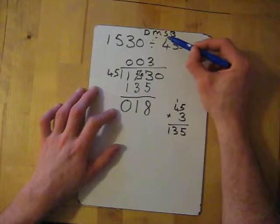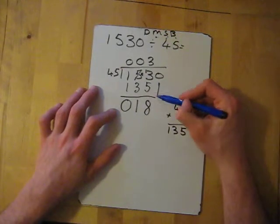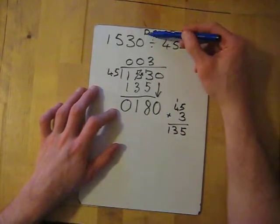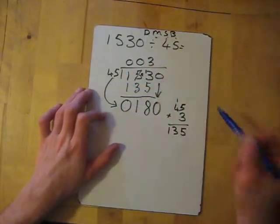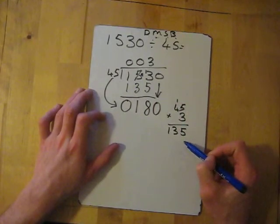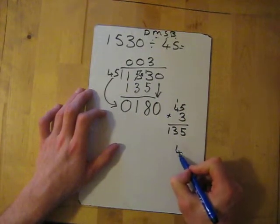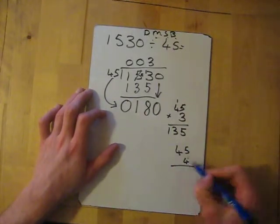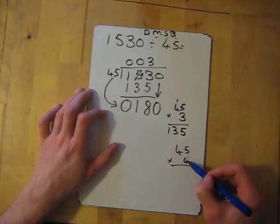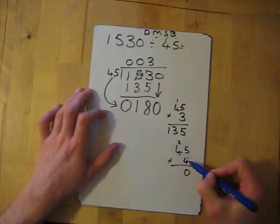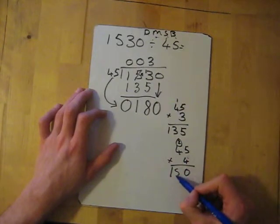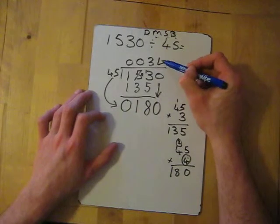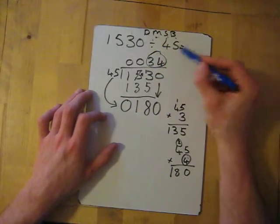We've divided, multiplied, and subtracted. Now next thing: bring down. So we bring down the next digit which is a 0. Now we're back to the start - divide. 45 into 180. Now 3 times was 135, let's check 4 times. 45 times 4 - 5 times 4 is 20, 4 times 4 is 16, add the 2 gives me 180. So it goes in exactly 4 times. We put the 4 and our answer is 34.